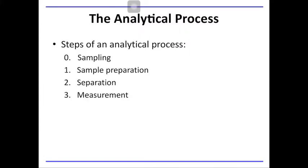Let's talk about the analytical process. Analytical chemistry, no matter how advanced it can get, still follows the analytical process. The steps include sampling, sample preparation, separation, and measurement. Even the modern analysis of blood samples follows the analytical process. Extraction of blood from a person is sampling, proper storage and handling of the blood is sample preparation, separating other components that might interfere with the analysis is separation, and using the machine to check the specific component of the blood falls under measurement.